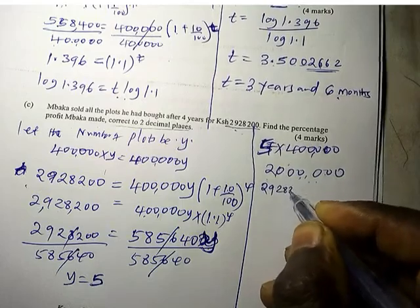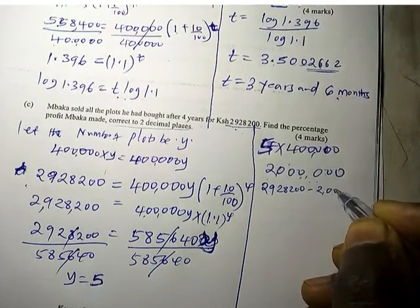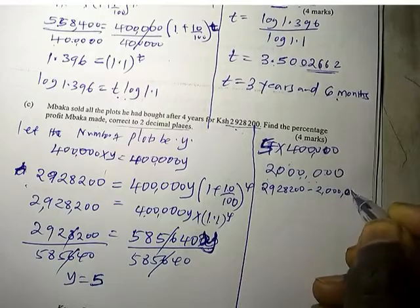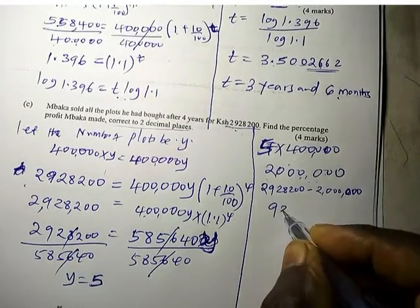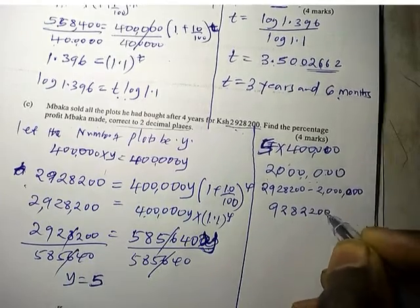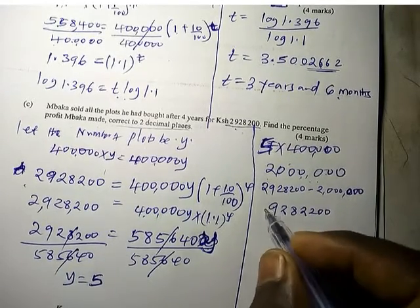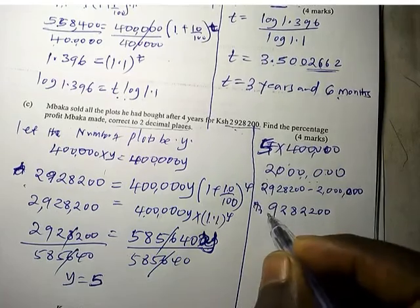Profit equals this minus this: 2,928,200 minus 2 million, and that gives us 928,200. This is the profit in Kenya shillings.